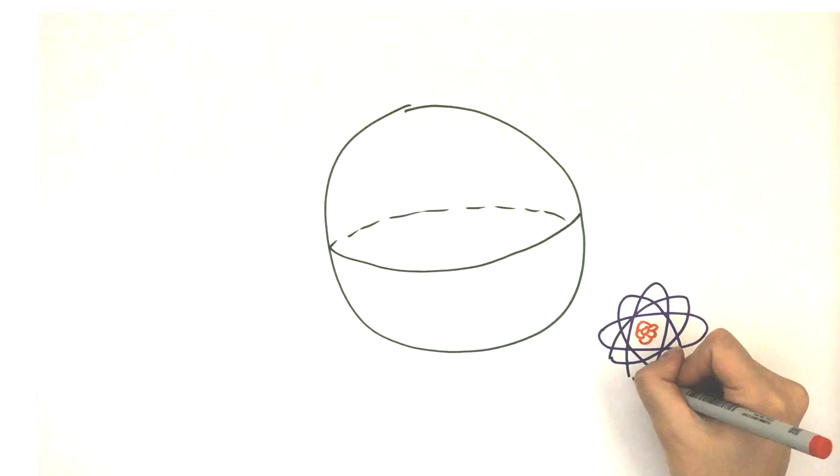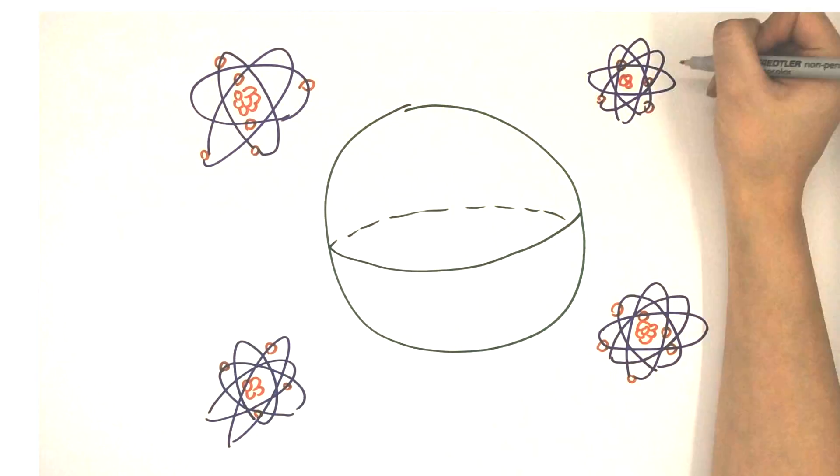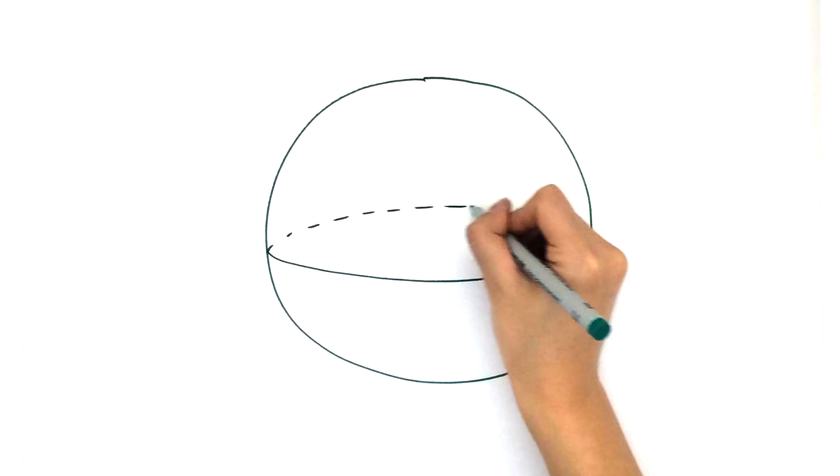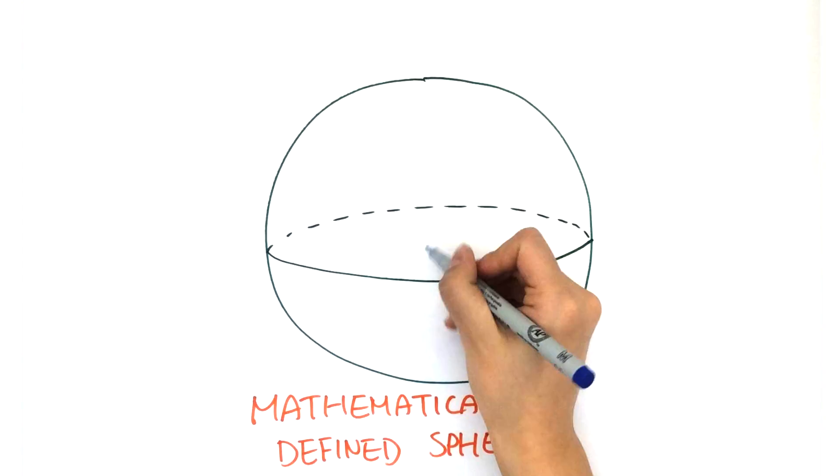The Banach-Tarski theorem works because it's not a physical sphere made of real atoms, but rather a mathematically defined sphere, which is an infinite collection of points that we're talking about.